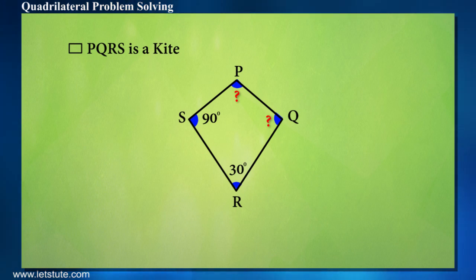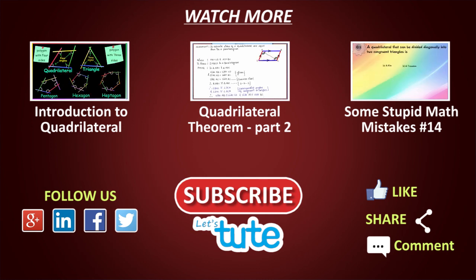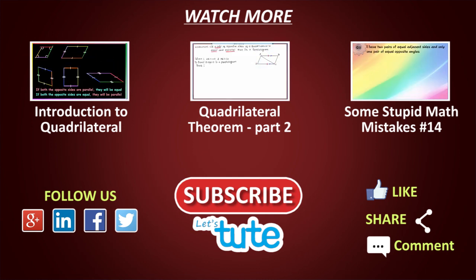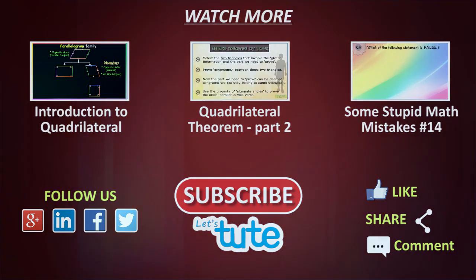Find the angles P and Q, where PQRS is a kite. Please write your answer in the comment box. If you have any doubt regarding this session or any other session of math, don't hesitate to ask us. Till we meet next time, keep watching, keep learning.